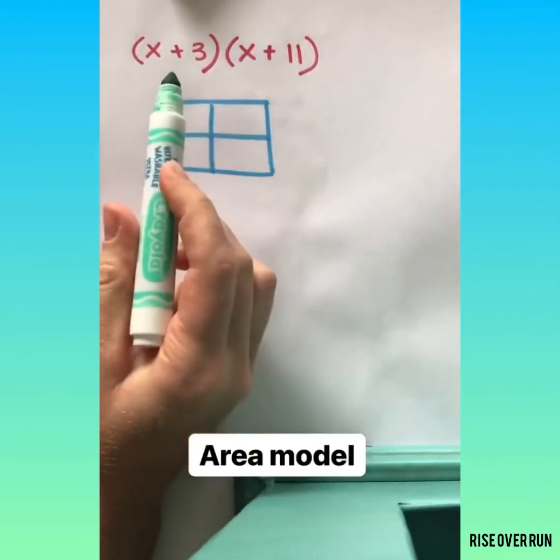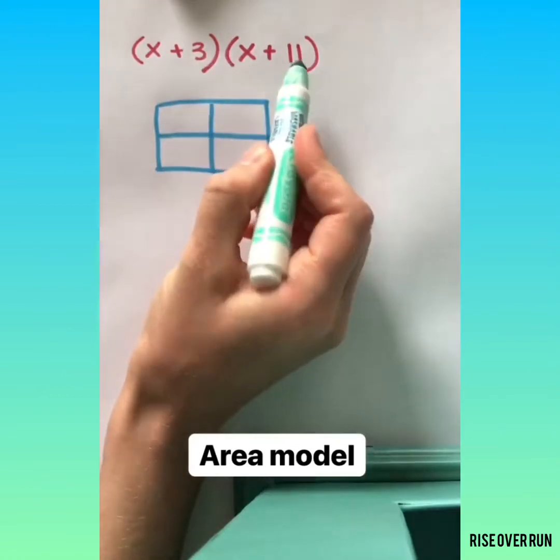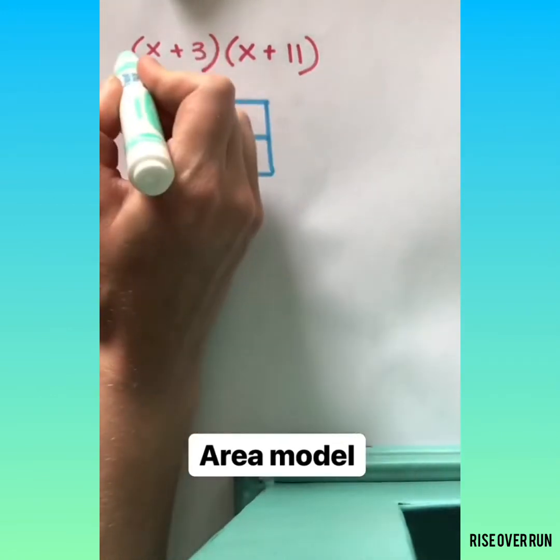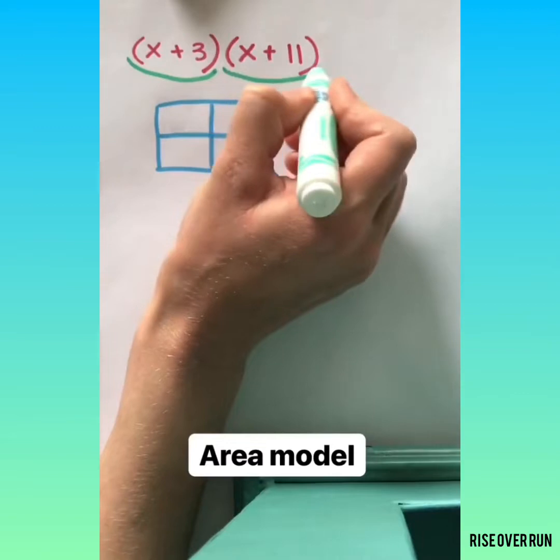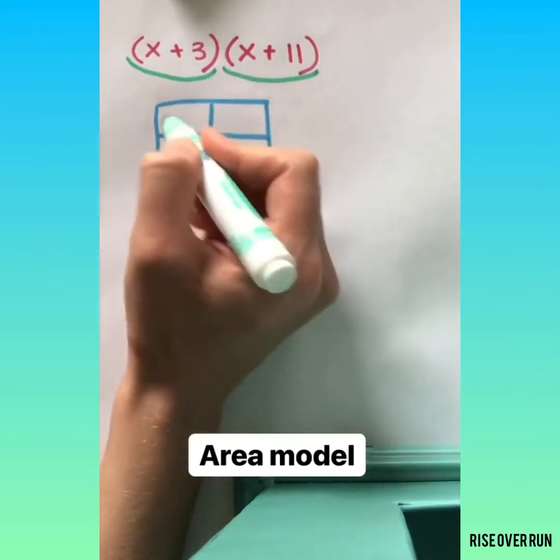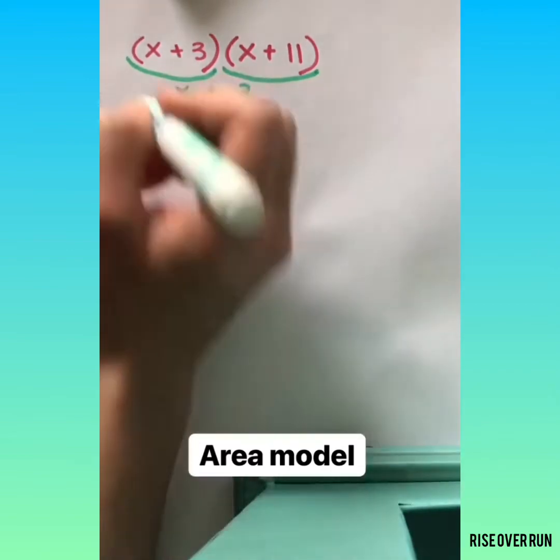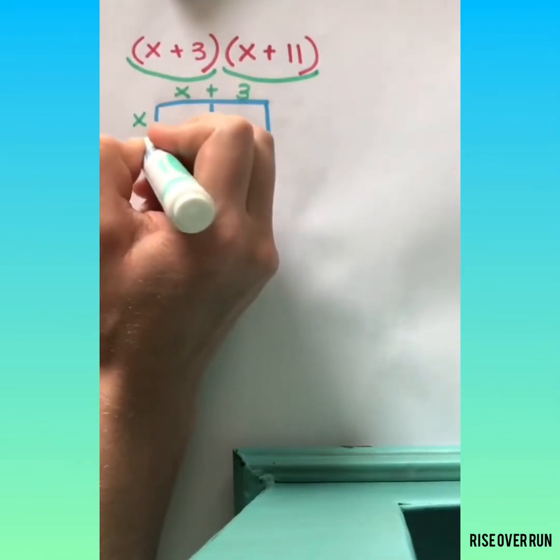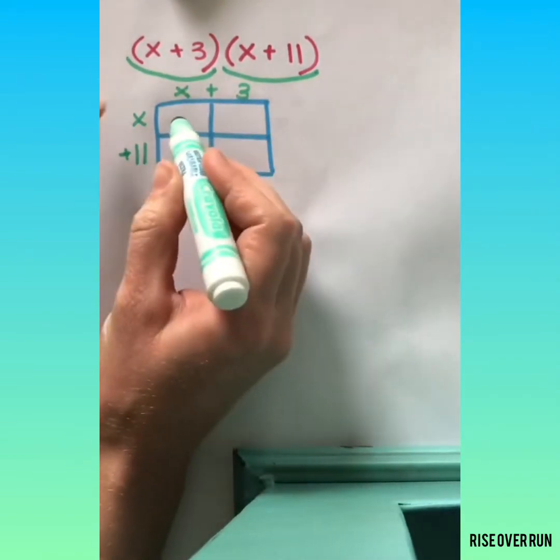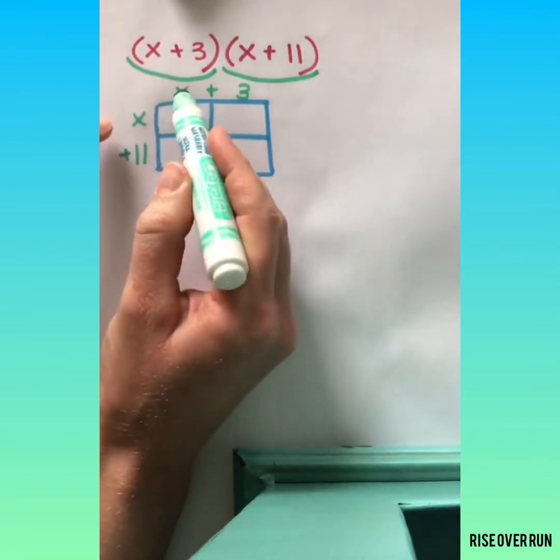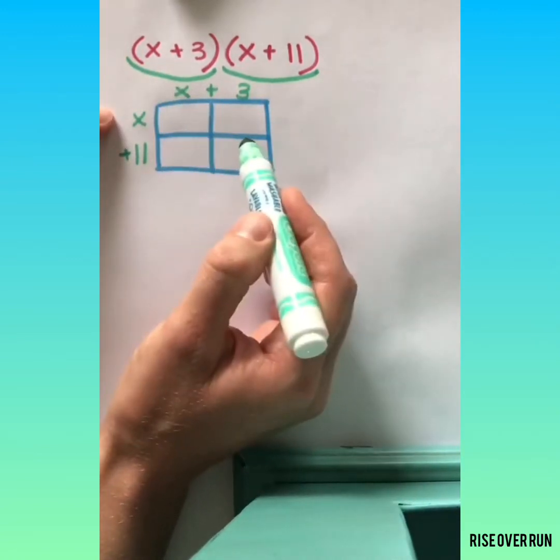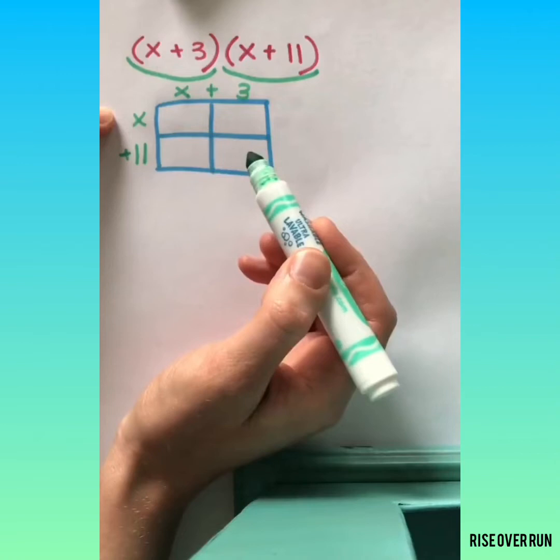Let's set up an area model to help us multiply these polynomials. So here are our two factors and we're going to set them up as a length and a width. We have x plus 3 and x plus 11. Now in each of these boxes inside, we'll see what matches up as a length and a width and multiply to get that product.